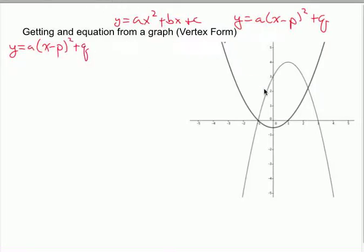And in this case, I know that p and q come from the vertex, and the vertex in this case is 1 and 4. Therefore, p is equal to 1, q is equal to 4.